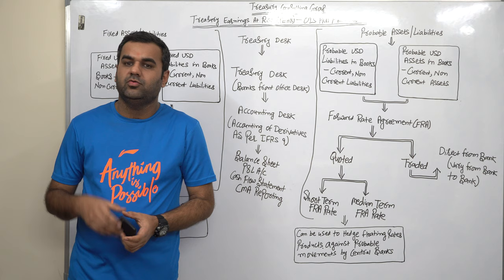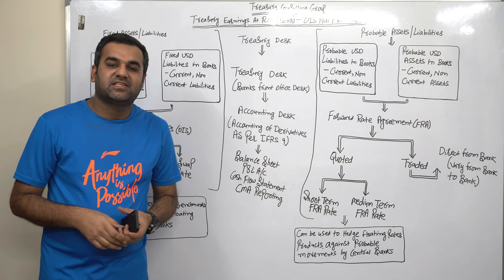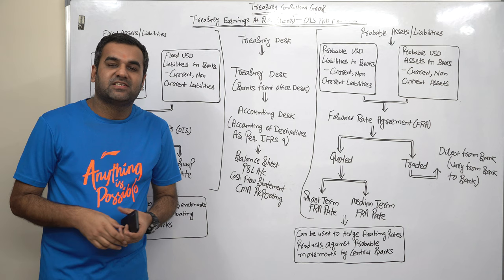Well, in English, there are two definitions of TEAR. One is which is coming from the eyes and one is this, which is Treasury Earnings at Risk.